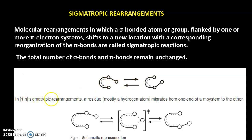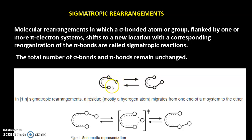Now, the notation [1,n] sigmatropic rearrangement: the first number represents where the atom was initially, and the second number is where the atom ends up in the product. Generally the atom which moves from one position to another is a hydrogen, so we also call these reactions hydrogen shifts. Depending on the position, these sigmatropic rearrangements are of different types: 1,3 shift; 1,5 shift; 1,7 shift, and so on.